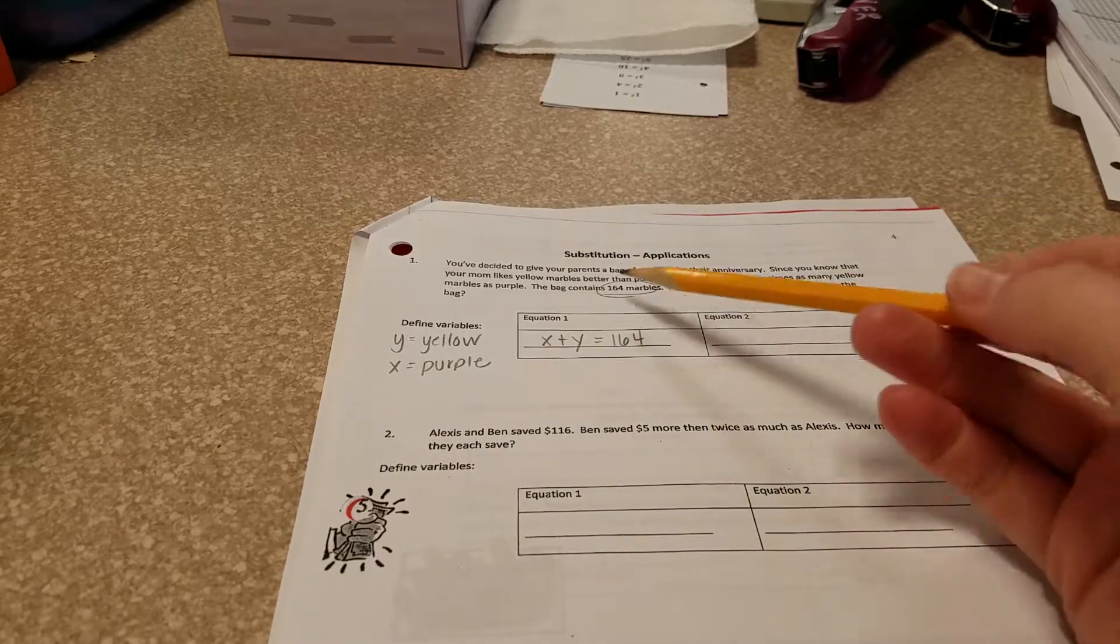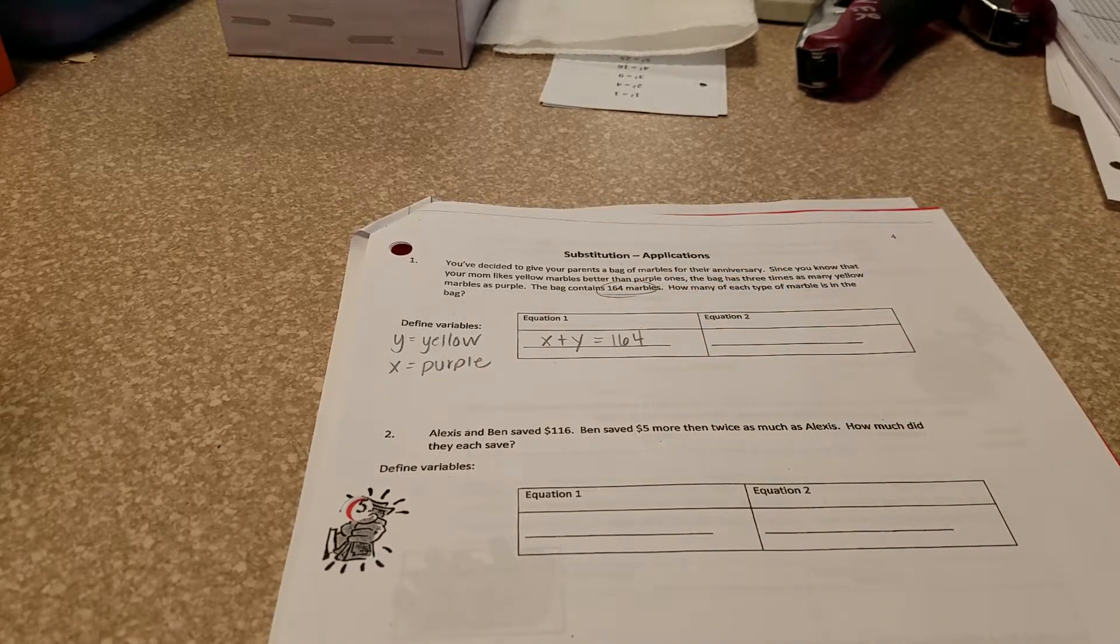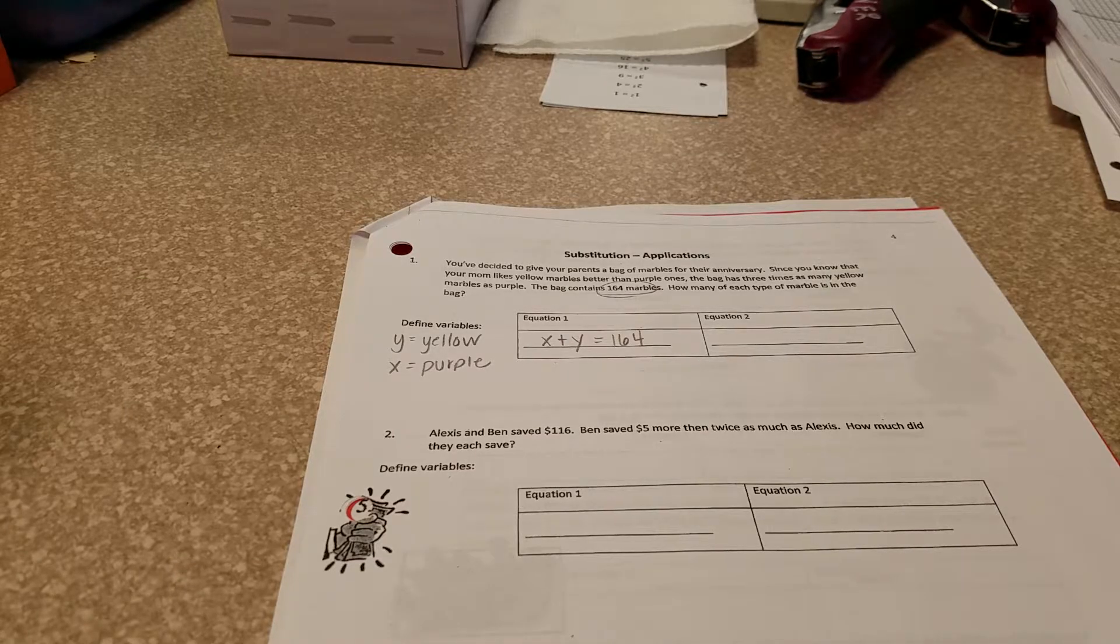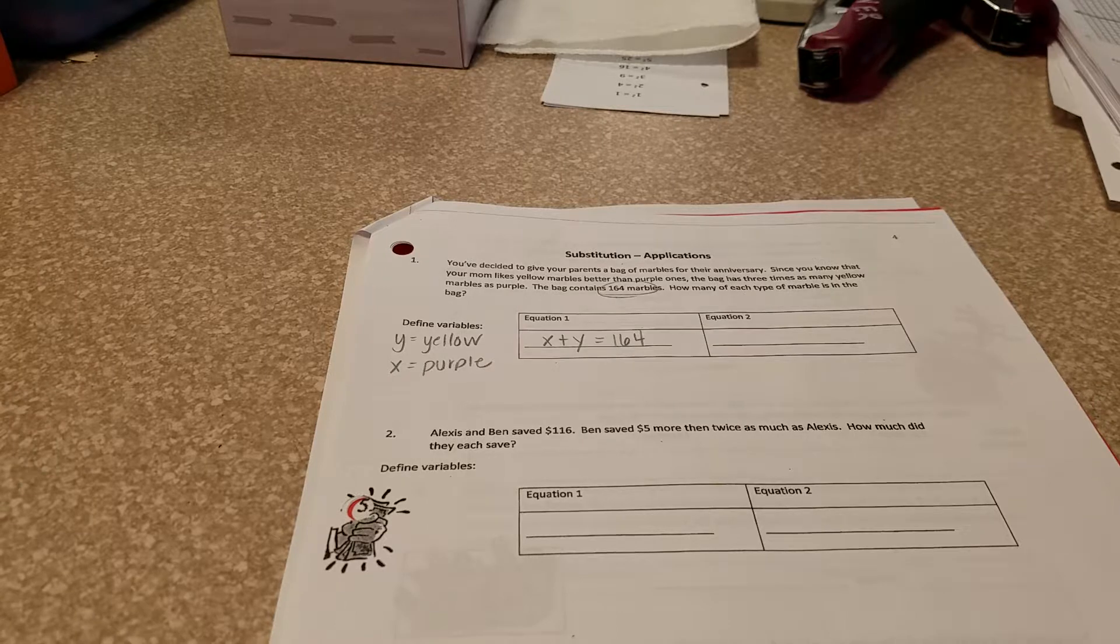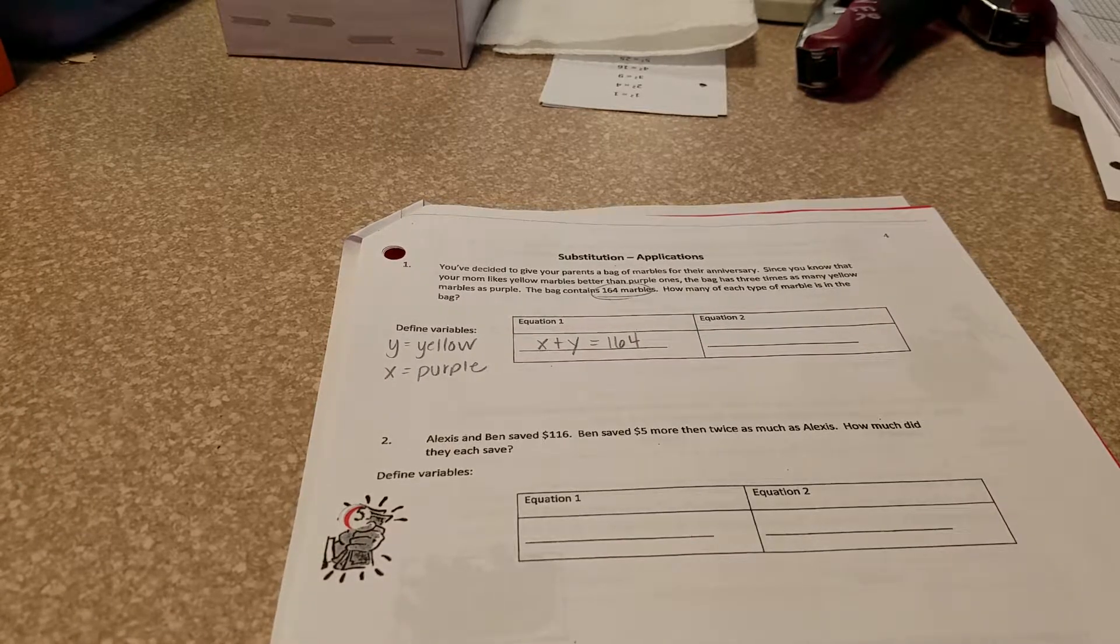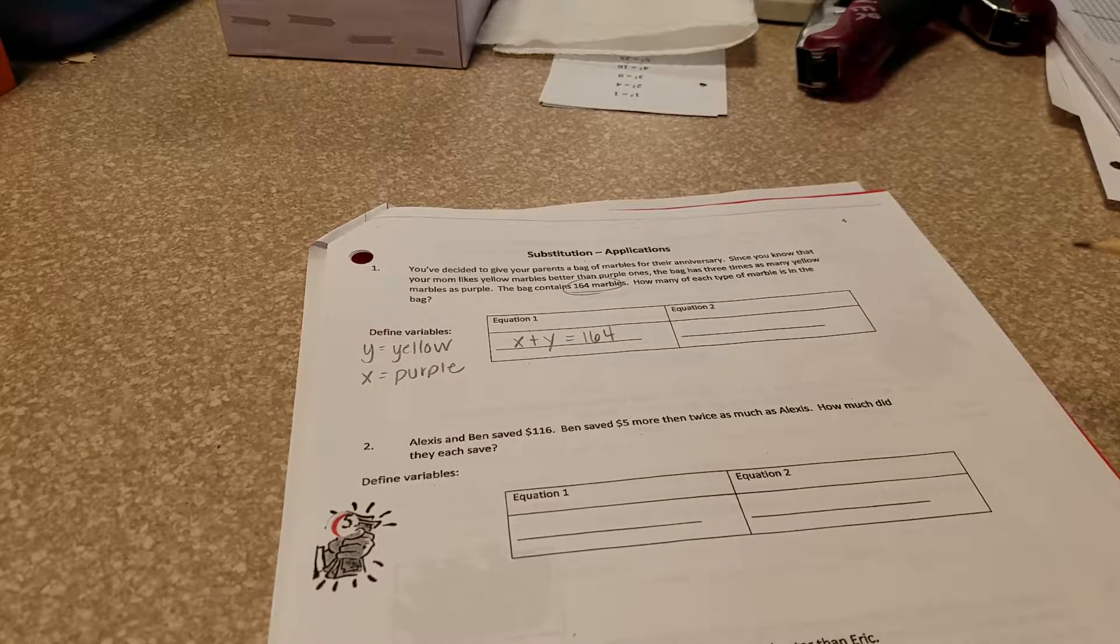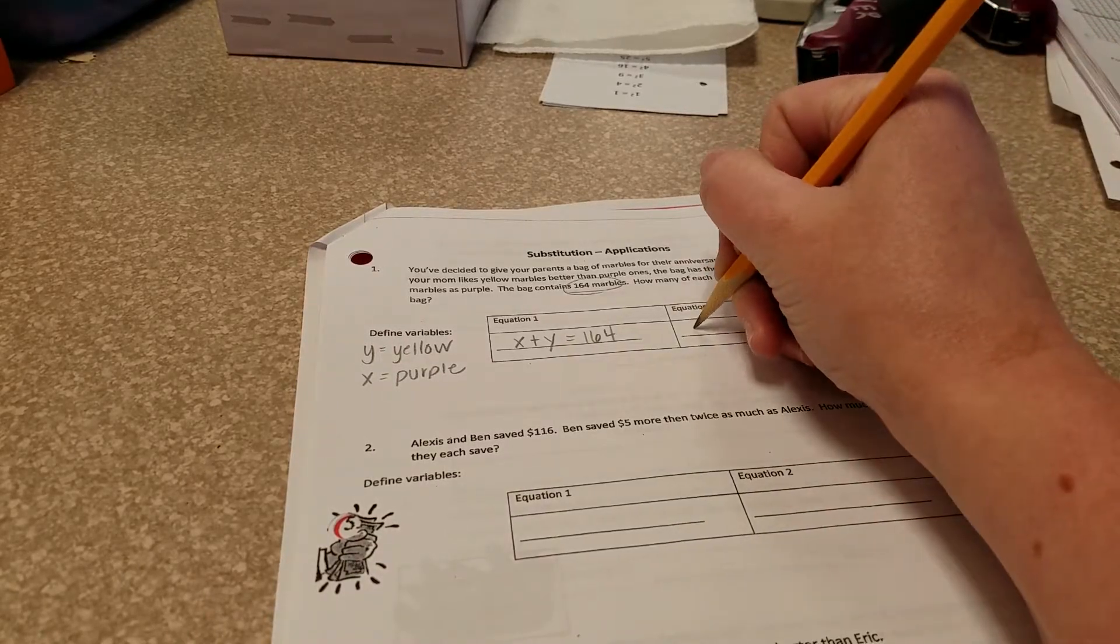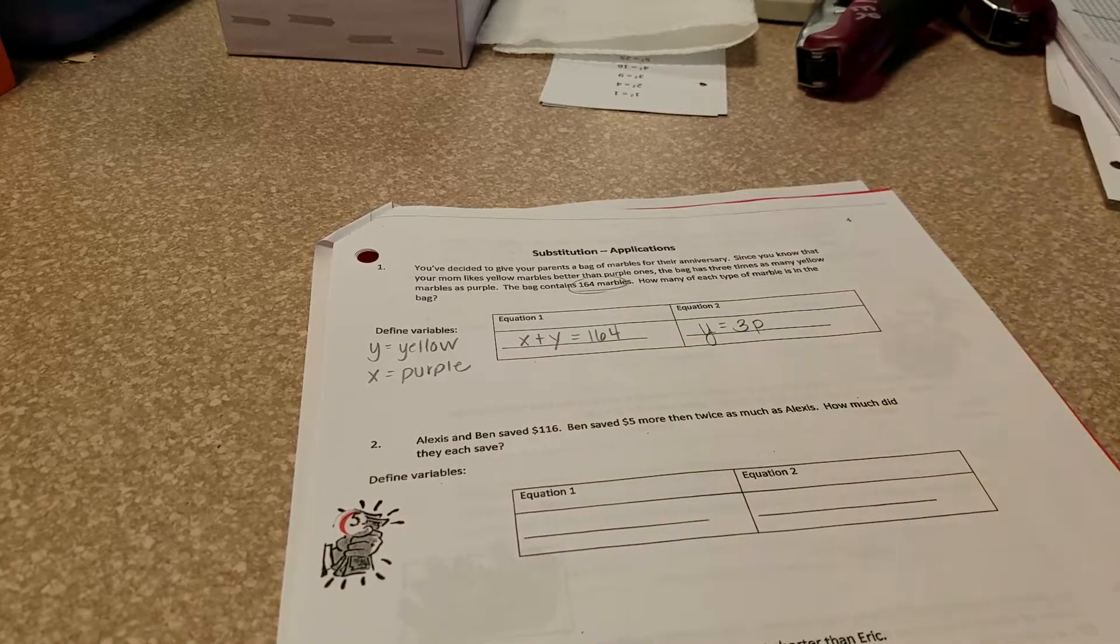You also know that your mom likes yellow marbles better than purple ones. So the bag has three times as many yellow marbles as purple marbles. How are we going to represent that in our equation? Since your mom likes the yellow marbles, one bag has three times as many yellow marbles as purple. So the yellow marbles in the bag are going to be equal to three times the number of purple marbles.